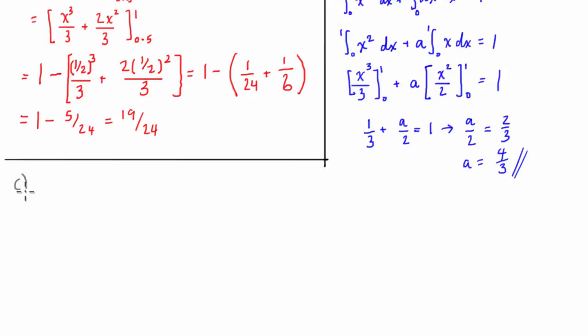Okay for part c we're asked to find the mean, the mean or mu, and the variance for this distribution. Now, basically let's write down our mean and variance formulas. We know that the mean of a continuous random distribution is equal to the expected value of x, which is equal to the integral on the domain of the variable times the function that defines the continuous random variable on the domain. So that's how we'd calculate our mean.